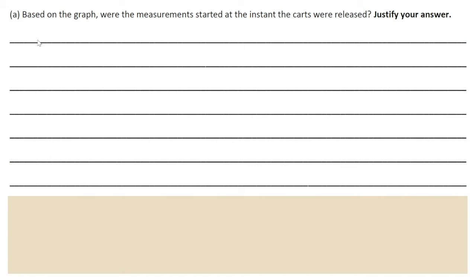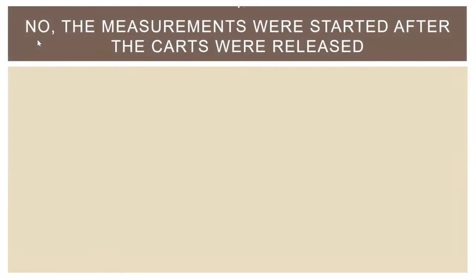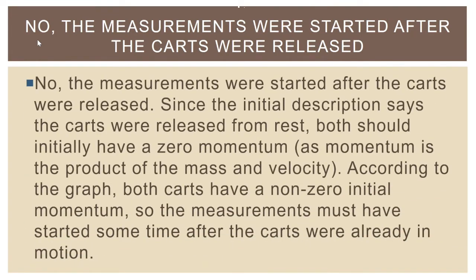The question is asking whether the measurements started at the instant the carts were released. The answer is no — the measurements were started after the carts were released. The initial description says the carts were released from rest, so both should initially have zero momentum, since momentum is the product of mass and velocity. If the objects start with zero velocity, they should have zero momentum. According to the graph, both carts have a non-zero initial momentum, so the measurements must have started sometime after the carts were already in motion.